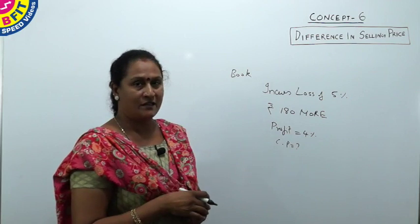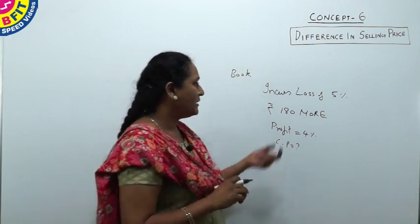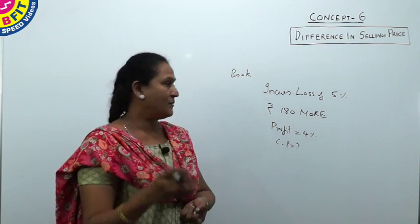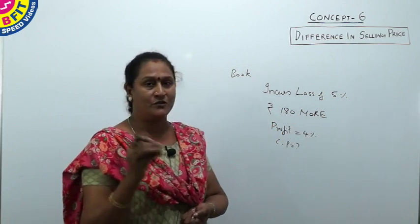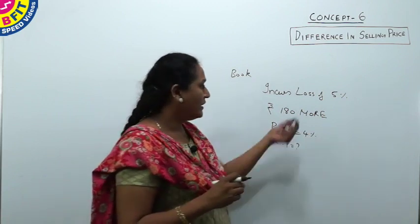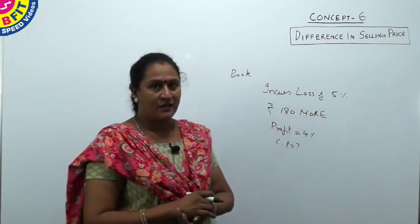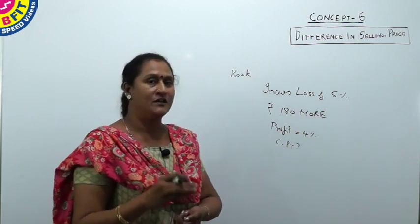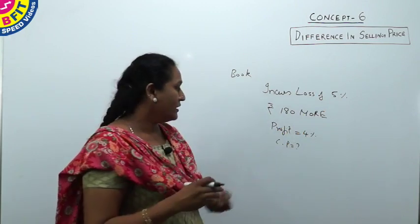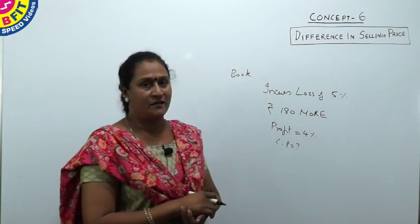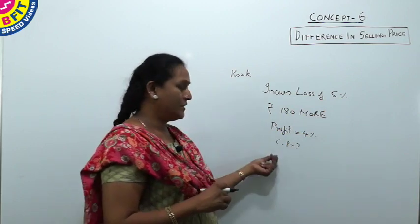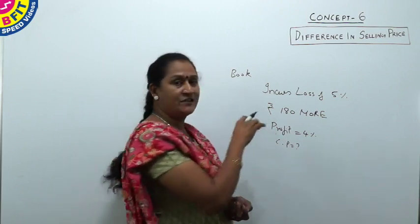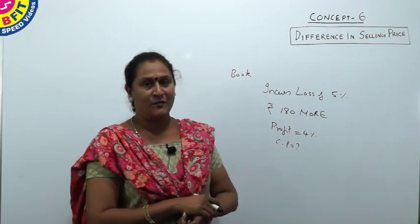In this question, for some selling price he incurs a loss of 5%. Say if he had sold the book for 1000 rupees, he incurs a loss of 5%. If he had sold it for 180 more, that is 1180 rupees, he would have got 4% profit. So no exact selling prices are given — only the difference in selling price is there.